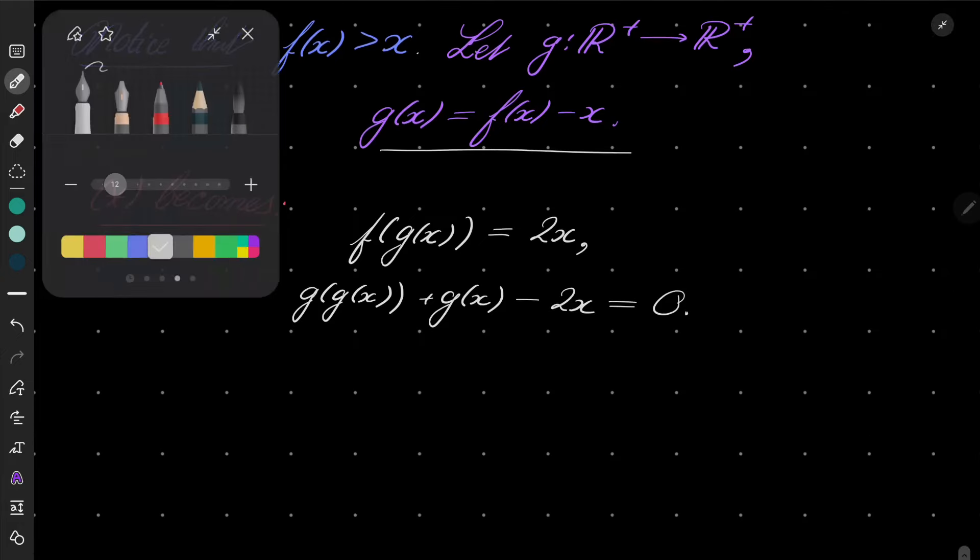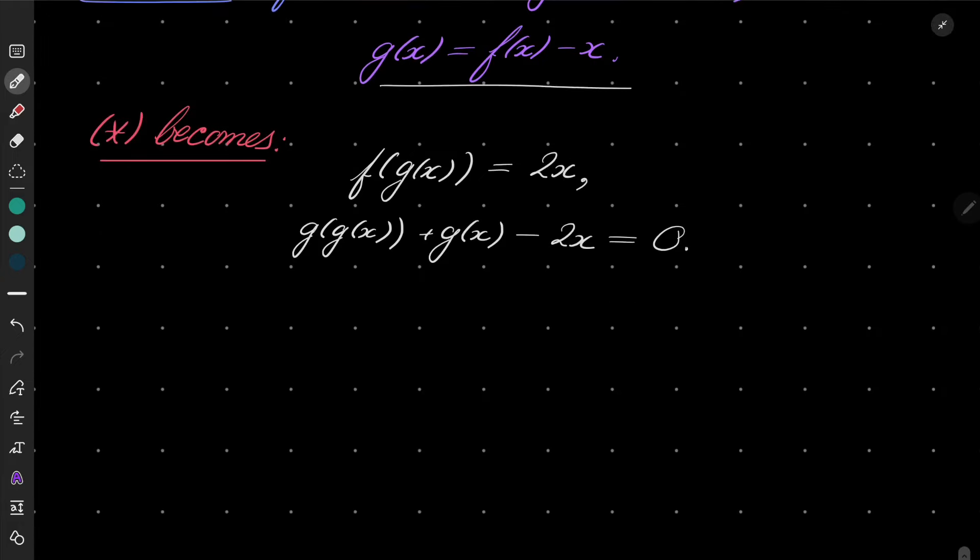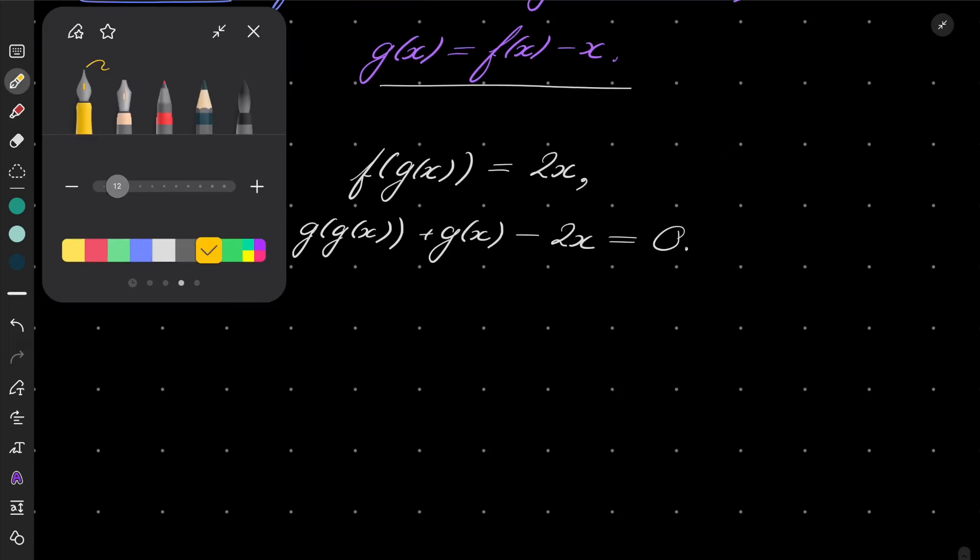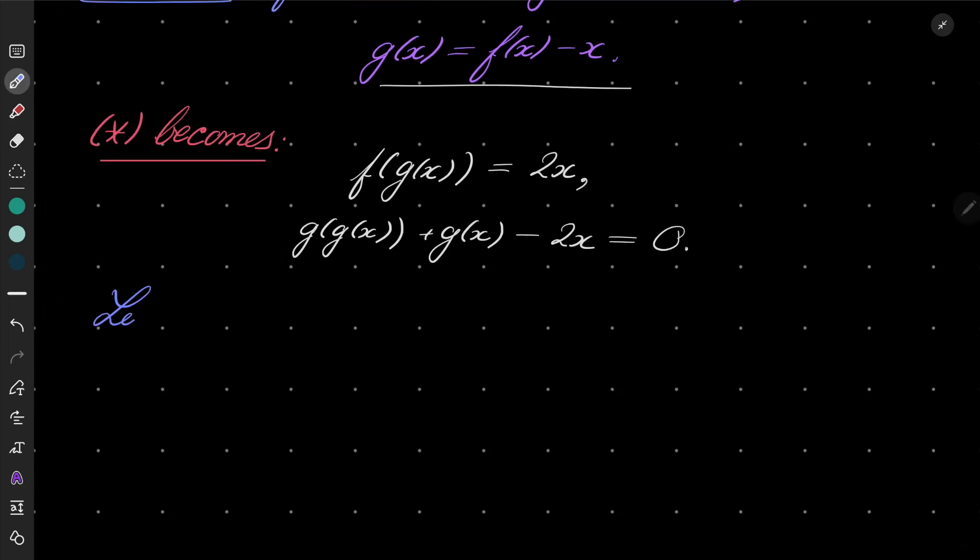We have this equation. And now replace x by g composed with itself n-2 times of x, then we have...